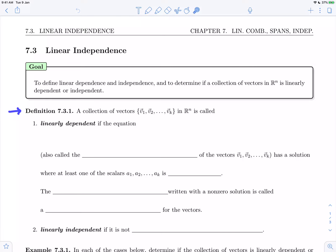Let's start with definition 7.3.1. A collection of vectors v1, v2 through vk in Rn is called linearly dependent if the equation a1v1 plus a2v2 plus all the way up to akvk equals the zero vector.